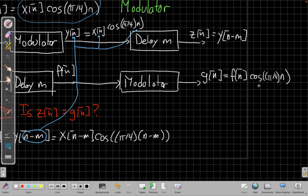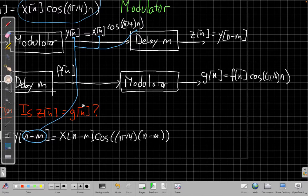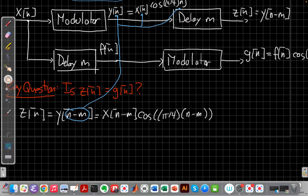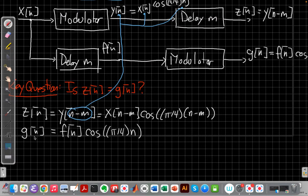I'll make myself a little more room here. Right so g[n] is f[n] times cosine of pi over 4n and I'm going to bring this down below too, put this down here so I can compare them more easily.